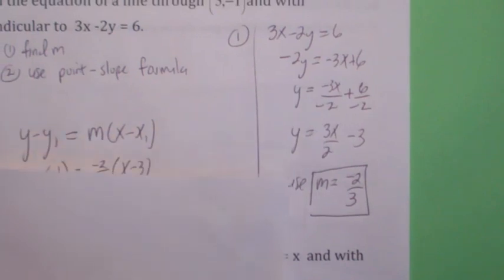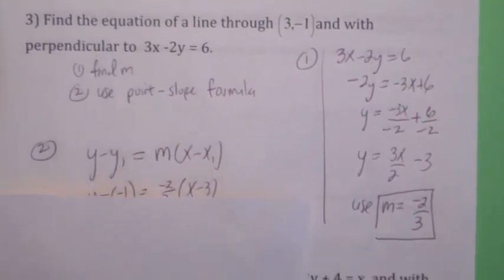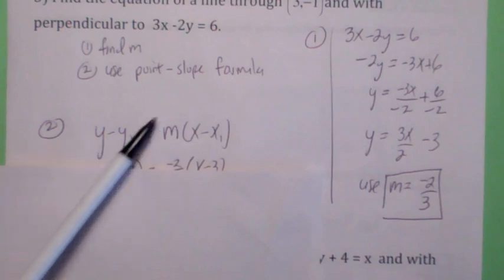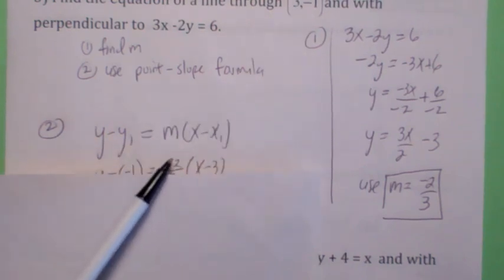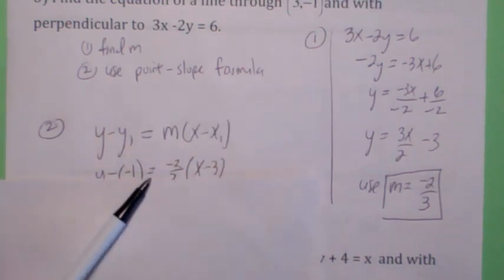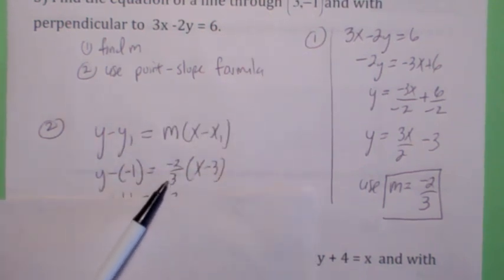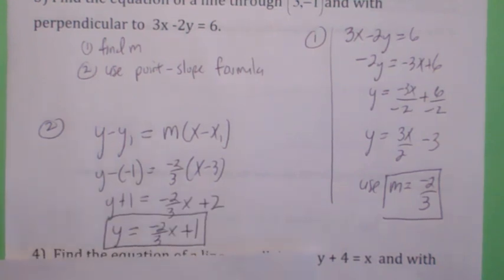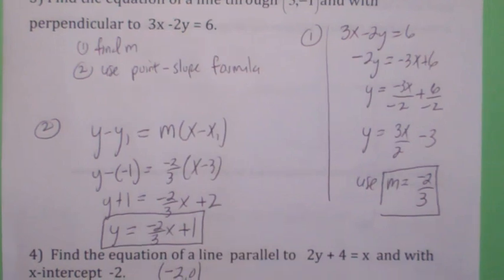Now we're back in business. To finish the problem, you plug in the point x equals 3, y equals negative 1, and for our slope we plug in negative 2 thirds. Simplify and solve for y — I get y equals negative 2 thirds x plus 1.